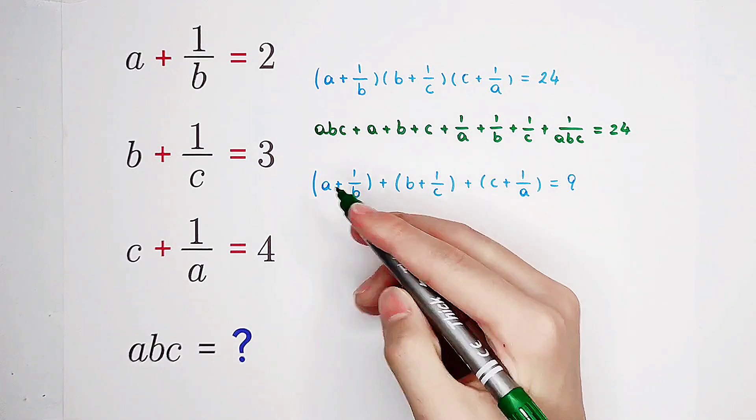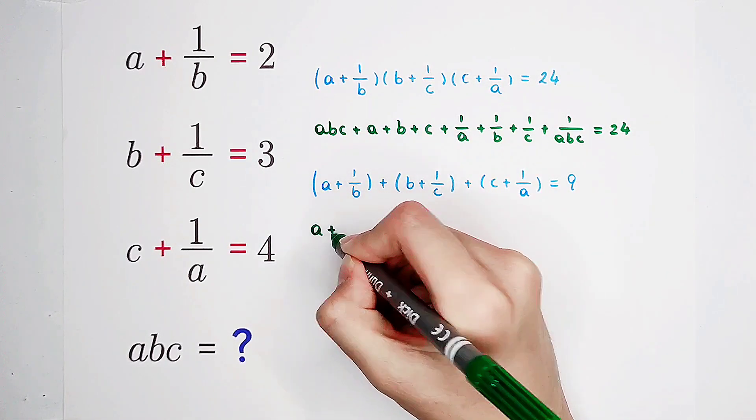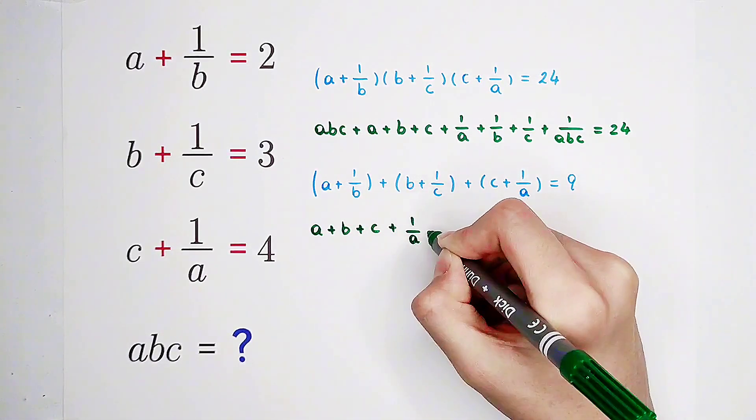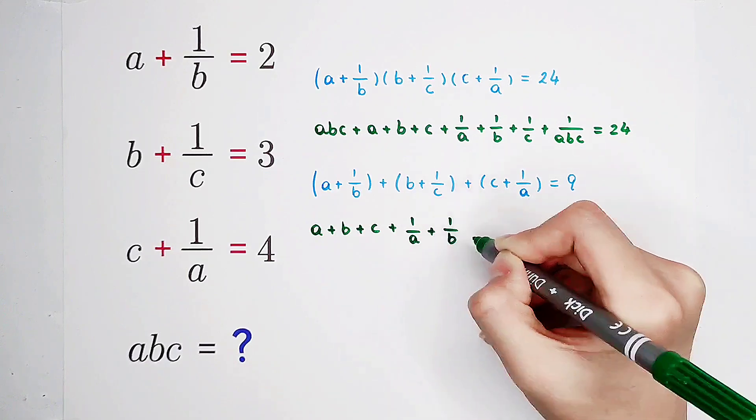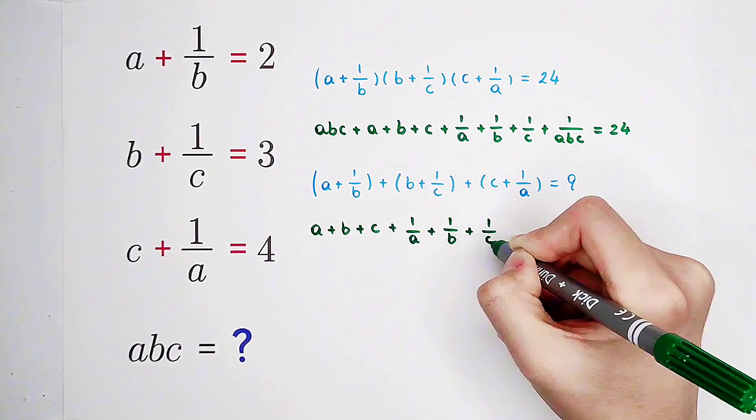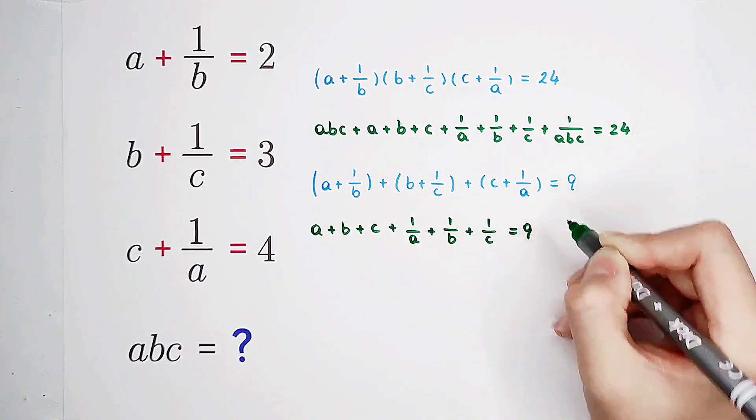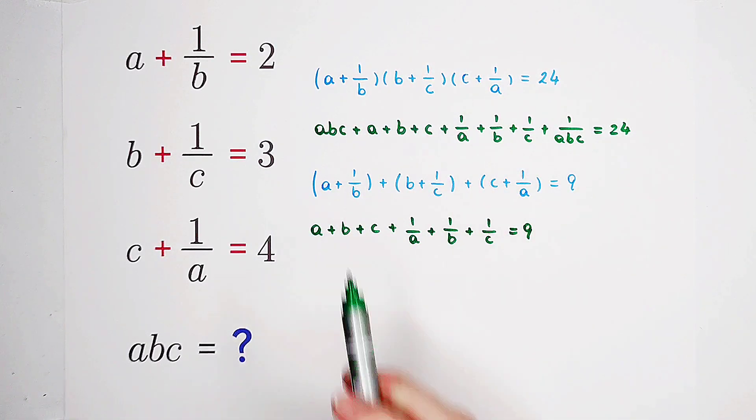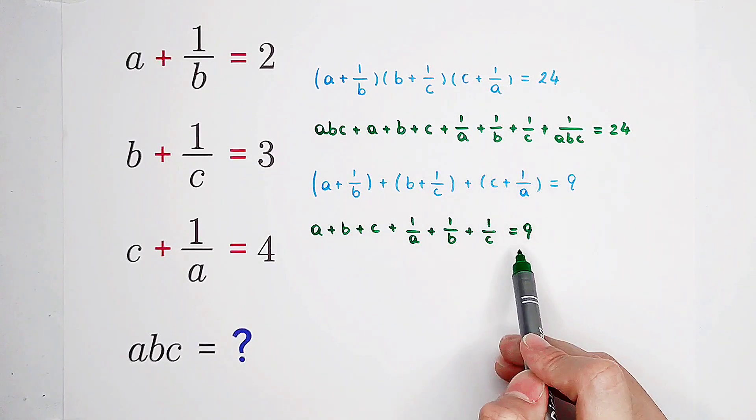So here is a plus b plus c plus one over a plus one over b plus one over c. Now you can see this is here. So now we can replace this with nine.